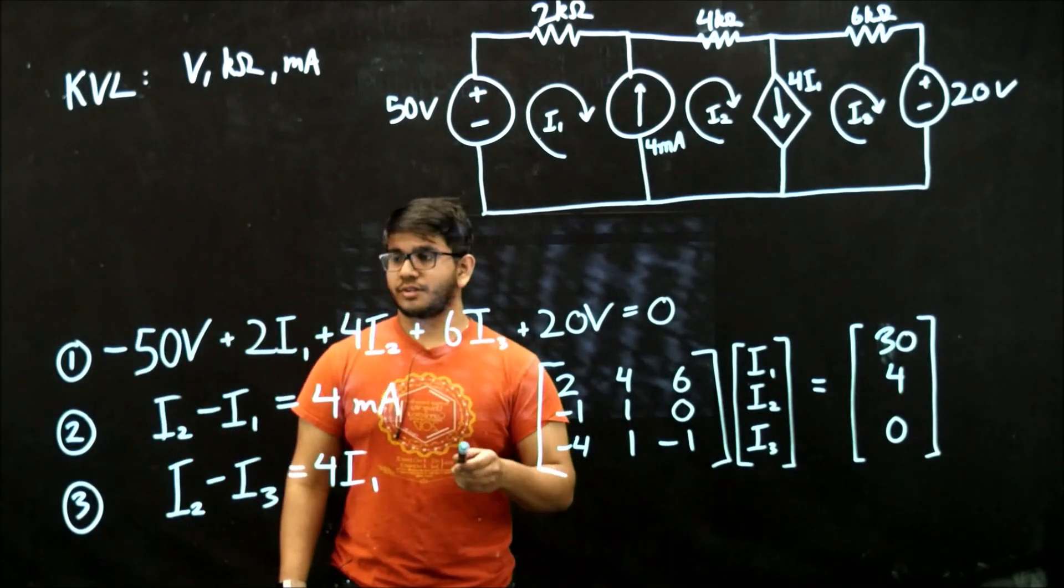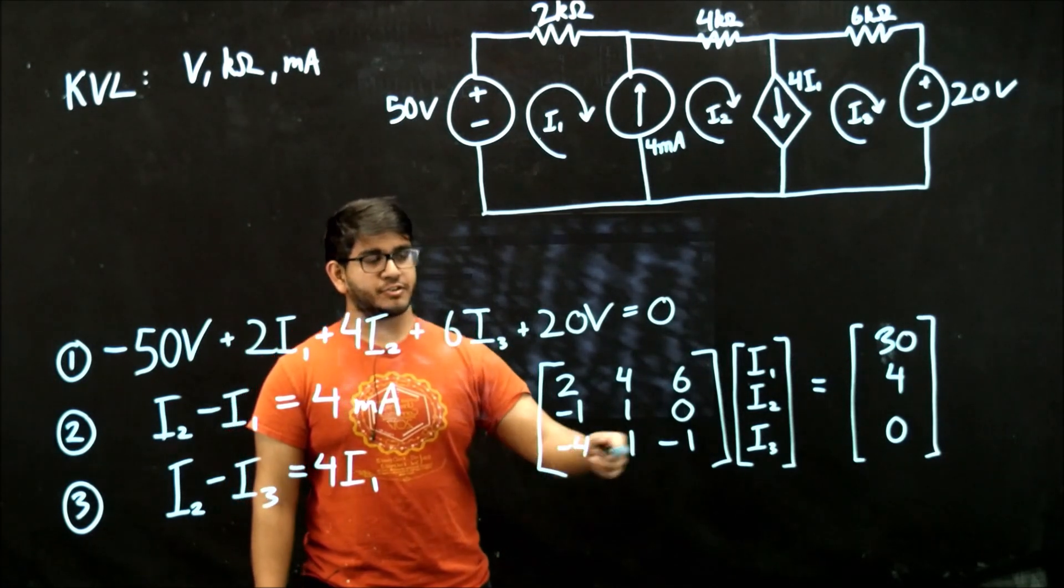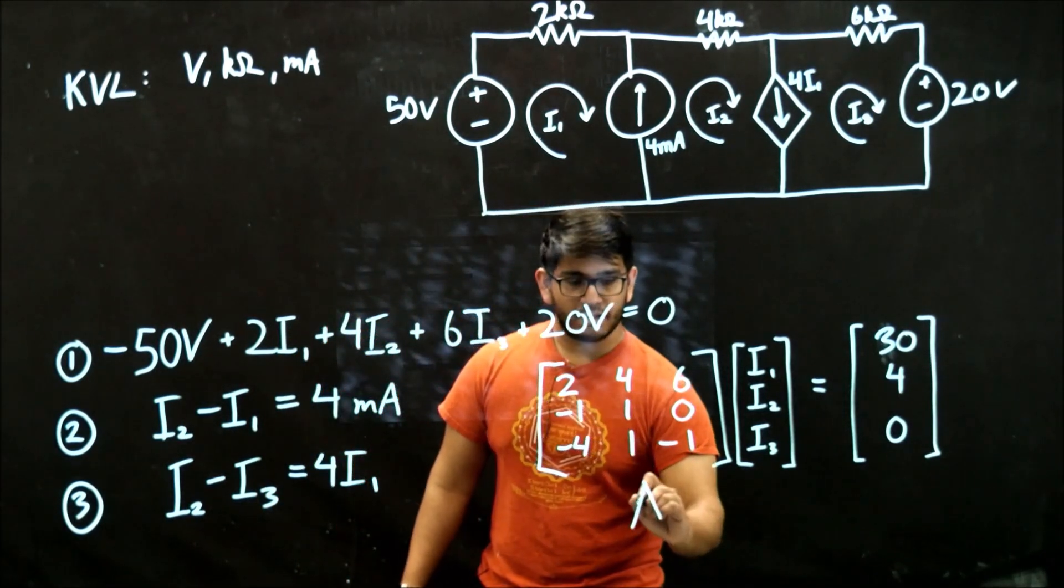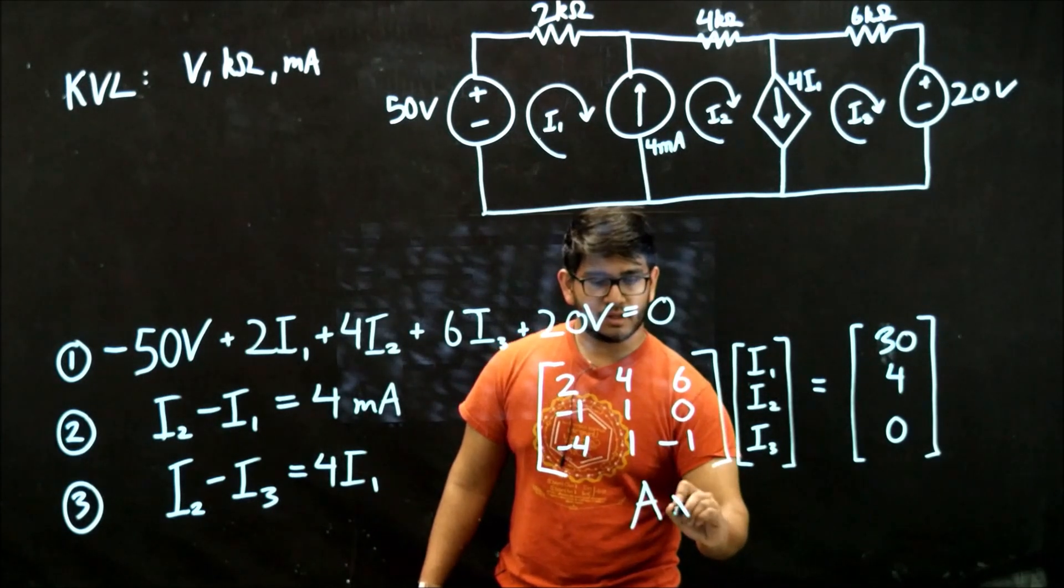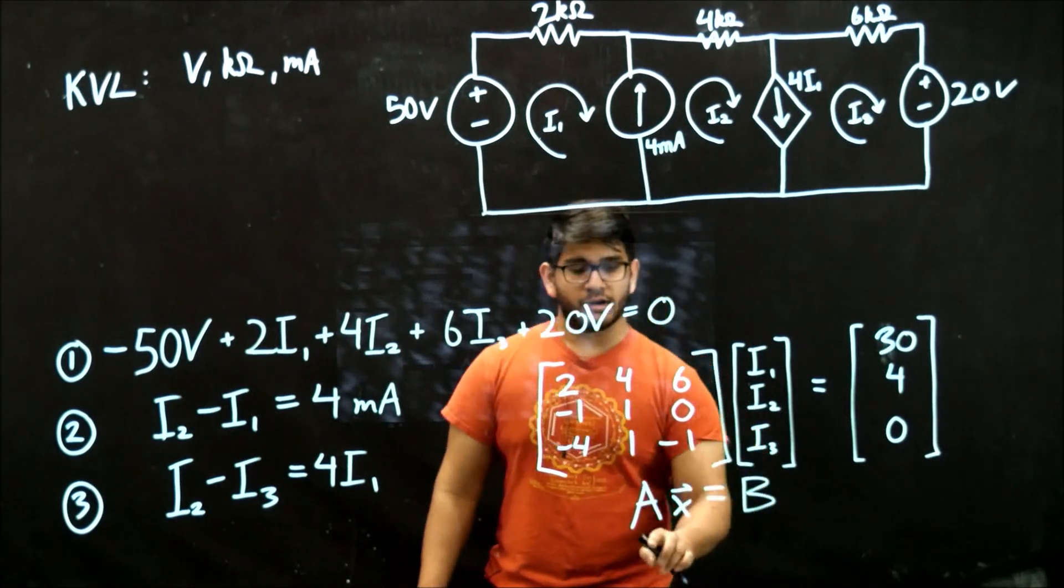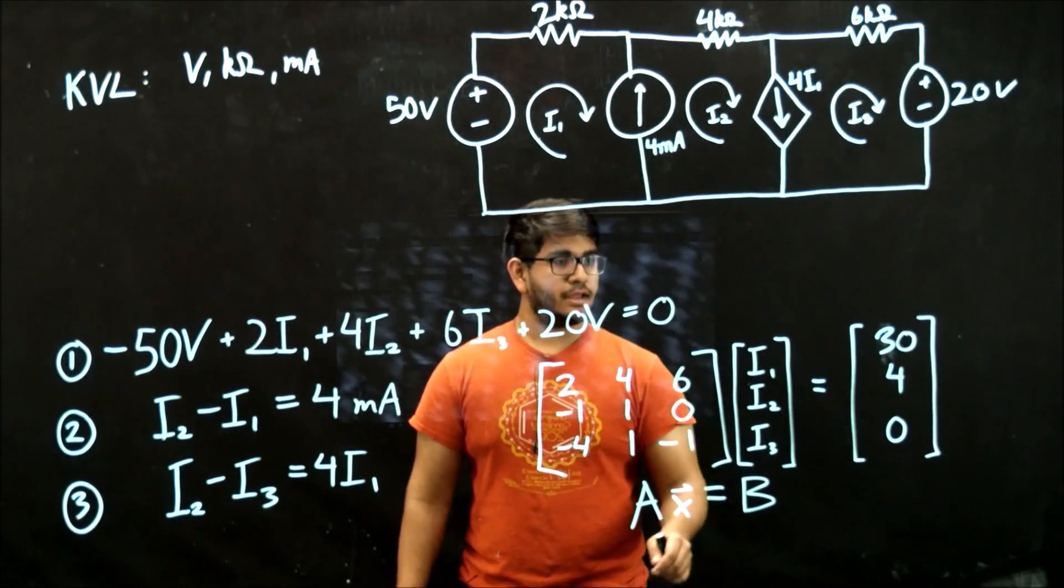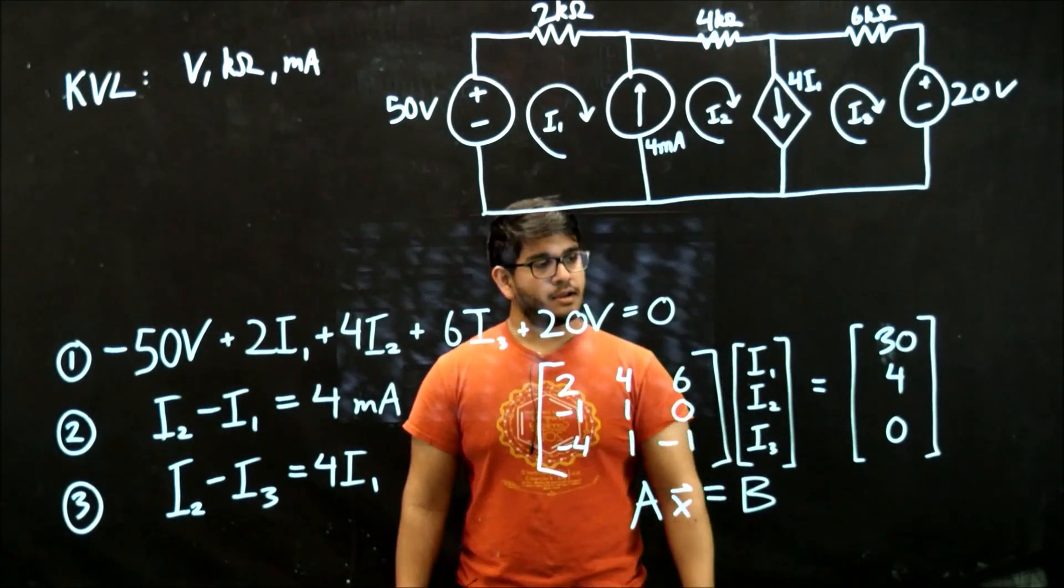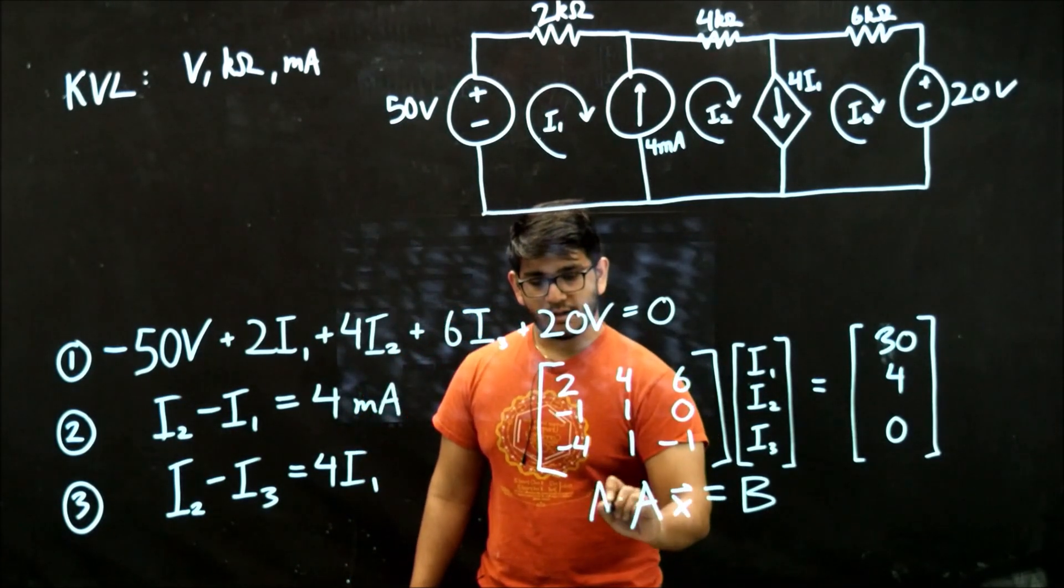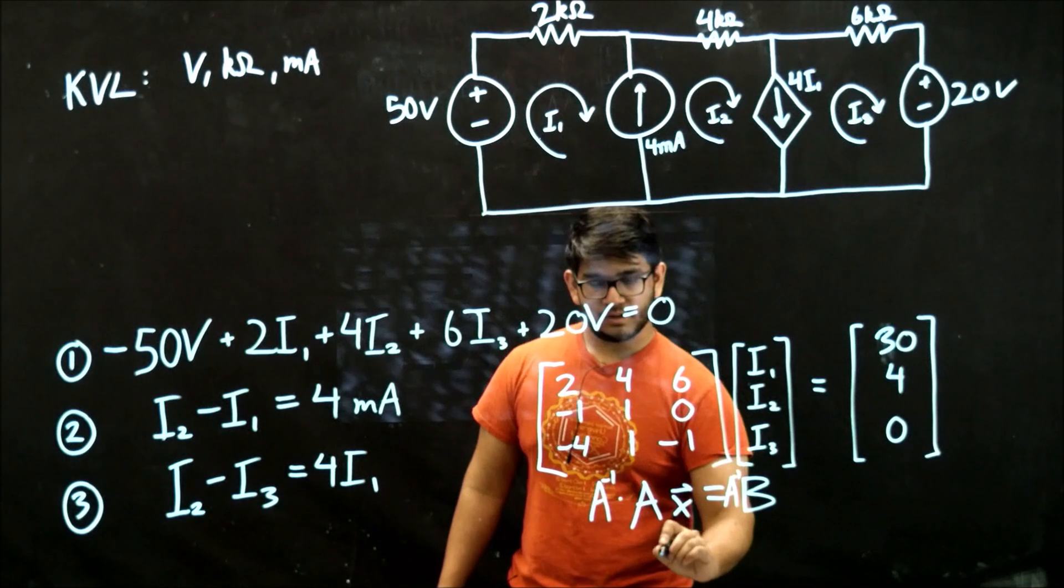There's multiple ways to solve this system of equations. The one I chose was to put it into the matrix equation, which has the form A times x equals B, where A and B are matrices and x is a vector, in this case it's a vector of your currents. Then multiplying both sides by the inverse of A will yield x.